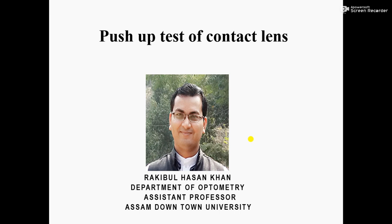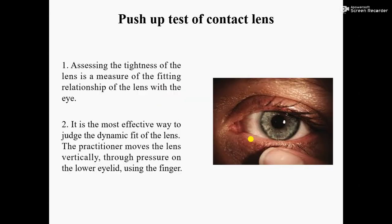Number one: assessing the tightness of the lens is a measure of the fitting relationship of the lens with the eye. It means after inserting the contact lens, we have to notice the contact lens movement — whether it shows tightness or is free.